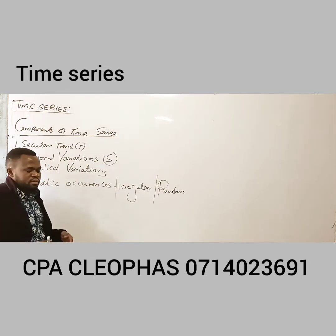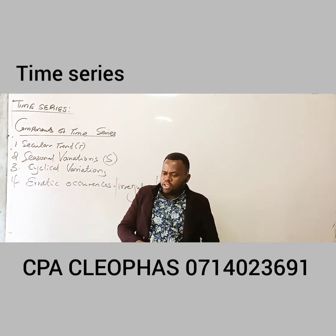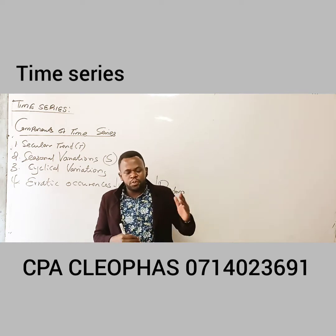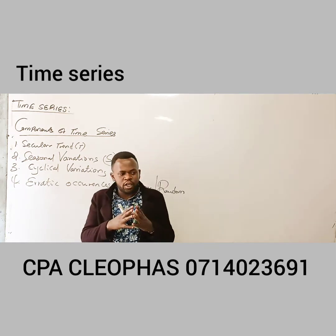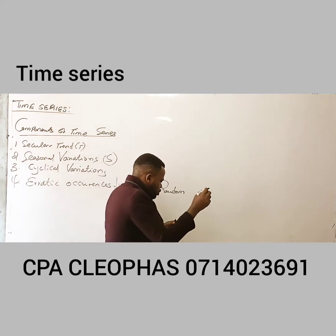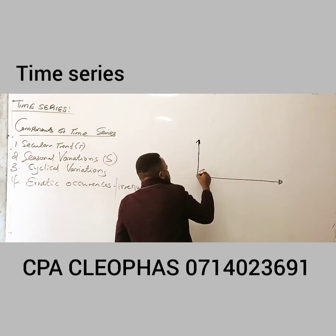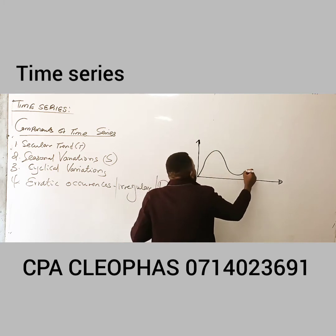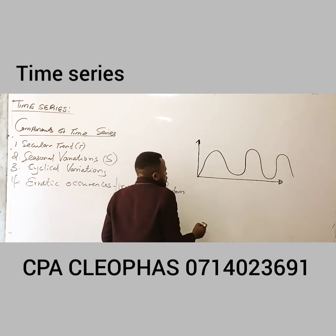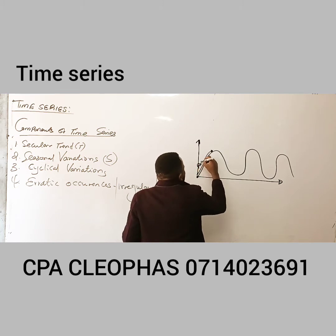Number three: cyclical variations. From your entrepreneurship, you must have covered what is called the business cycle. Remember the stages of a business cycle, because cyclical variations are attributed to the business cycle. When you start a business, during this initial period, you are trying to recover your capital — this is called the recovery period.